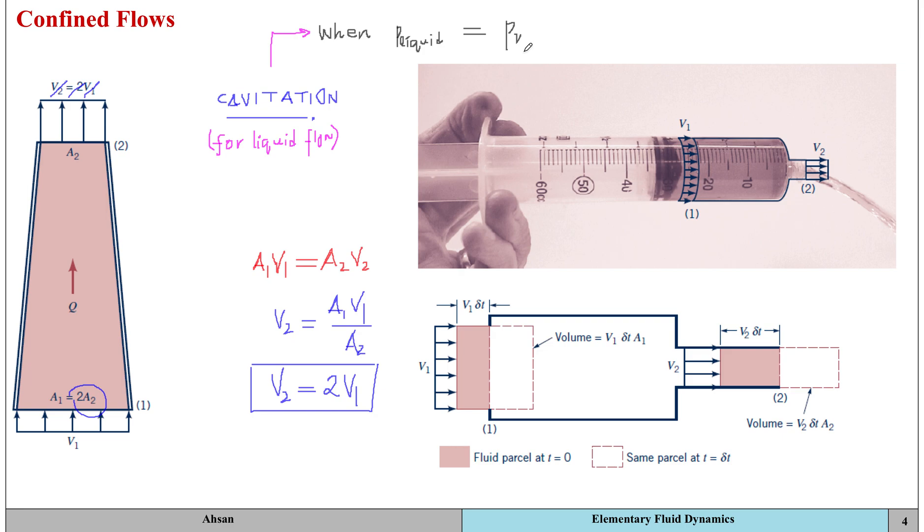A good real life example of cavitation is if we're looking at a garden hose and there's a kink within this hose. What's going to happen is that a restriction takes place in the flow area, and because of this restriction, the water velocity through the restriction will be relatively larger.